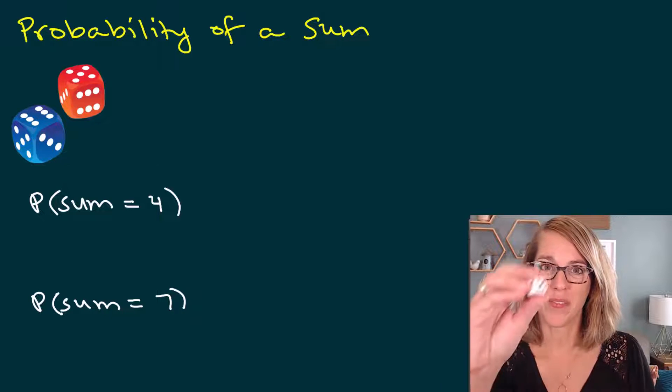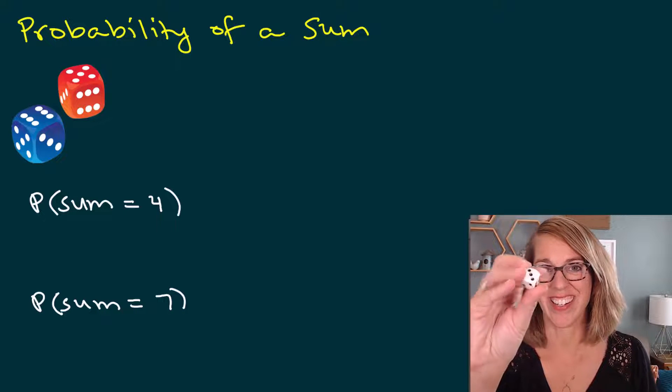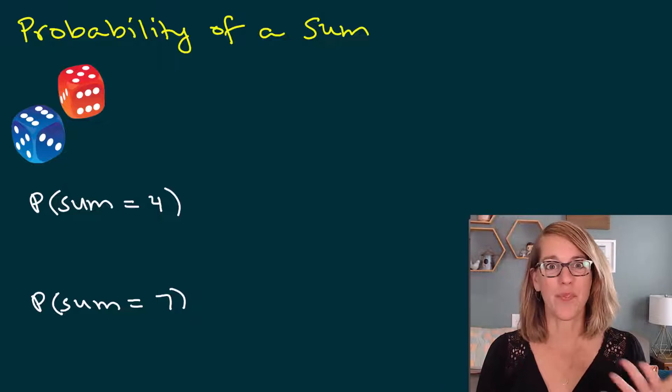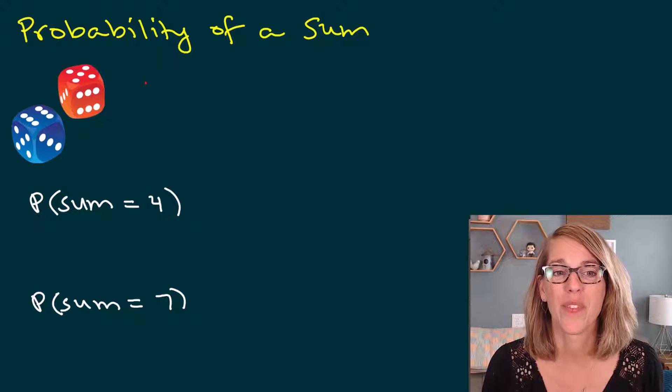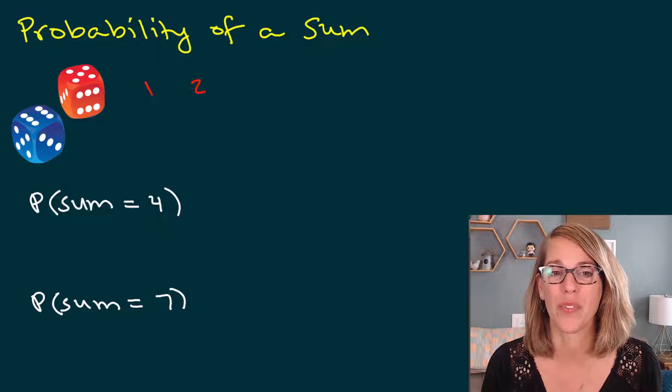Let's find the probability of a sum of two of our six-sided die. First, I want to decide what numbers I can come up with just so that we're familiar with our dice. With the first one, I can come up with anything one through six.